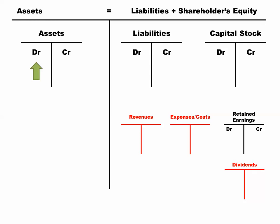Assets being on the left side of the big T go up with a debit. Liabilities being on the right side go up with a credit, and capital stock and retained earnings over on the right side as equity accounts also go up with a credit. You've got to keep in mind though, there's the temporaries. Revenues increase retained earnings, so just as a credit increases retained earnings, a credit increases revenues.